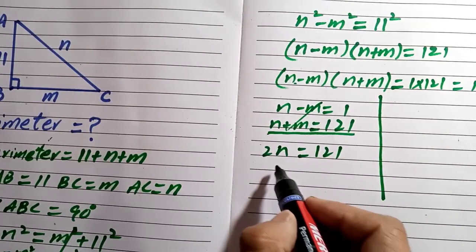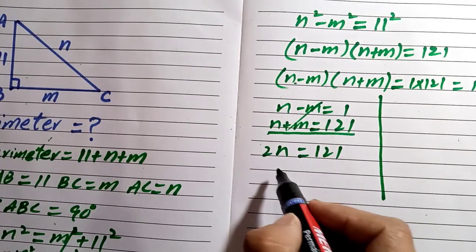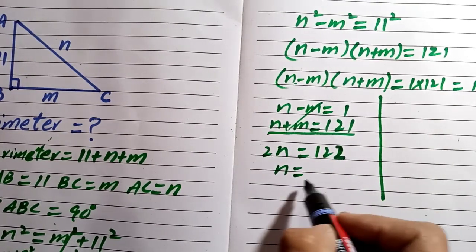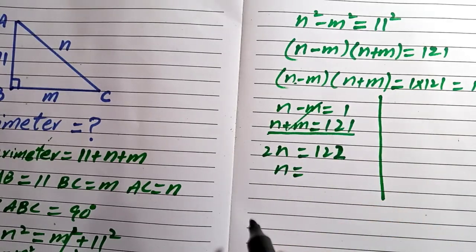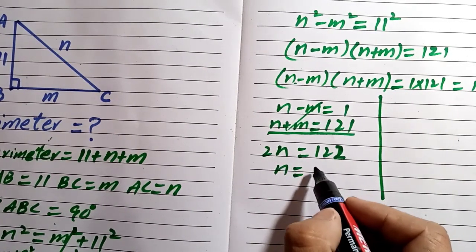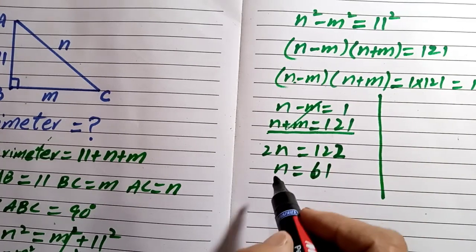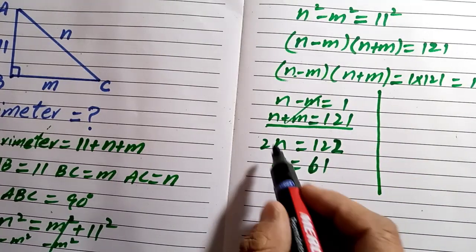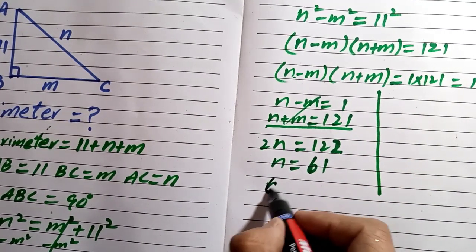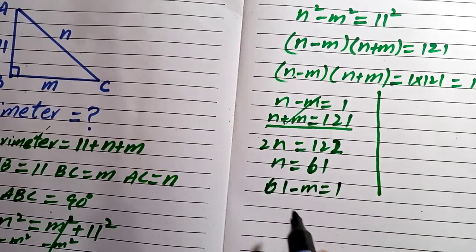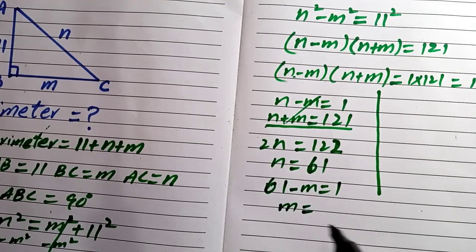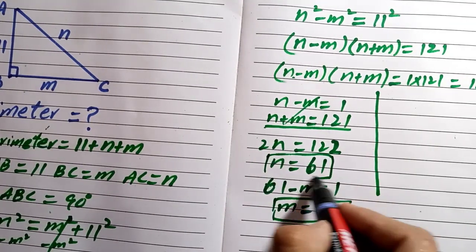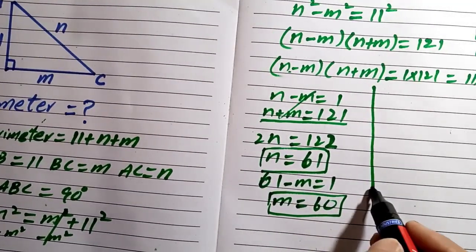We divide both sides by 2. Adding 1 and 121 gives 122, and dividing by 2 gives n equals 61. Substituting n equals 61 back into n minus m equals 1, we get 61 minus m equals 1, so m equals 60. Therefore n equals 61 and m equals 60.